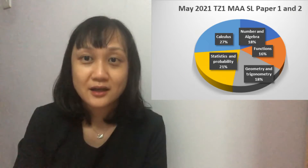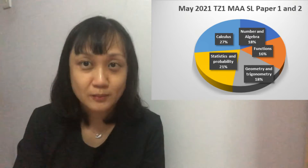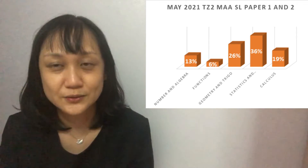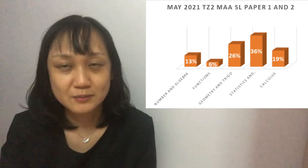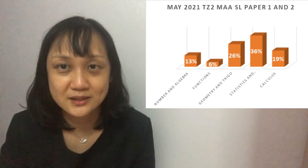I looked at the mark distribution for the IB Maths Analysis and Approaches SL exam for 2021 time zone one, and I noticed that the topics carrying the greatest weightage are first calculus, followed by statistics and probability, and finally geometry and trigonometry. Similarly, when I looked at the time zone two paper for May 2021, I noticed these same three topics — calculus, statistics and probability, and trigonometry and geometry — also carrying the greatest mark weightage. So it may be a good idea for students who are running out of time to focus on these three areas in their exam preparations.